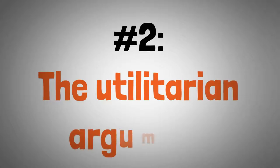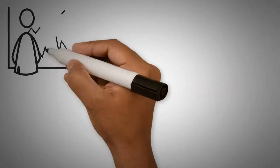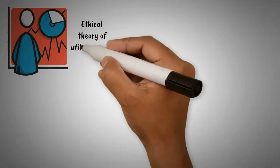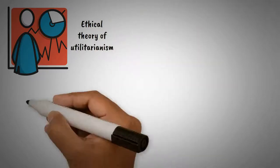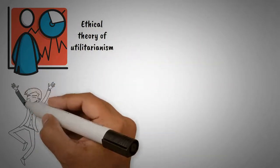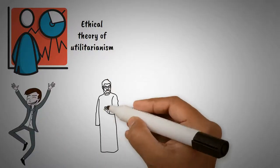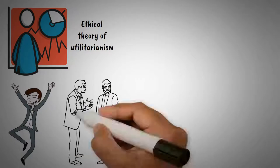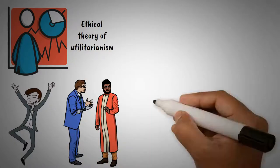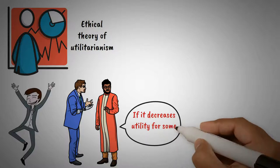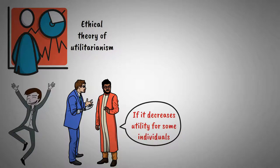Number two: The Utilitarian Argument. Supporters of market values also draw upon the ethical theory of utilitarianism. Utilitarianism prioritizes maximizing overall happiness or utility for the collective and argues that any action leading to a net increase in utility is morally justifiable, even if it decreases utility for some individuals.